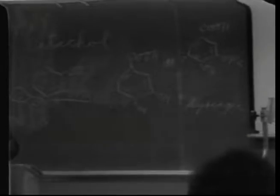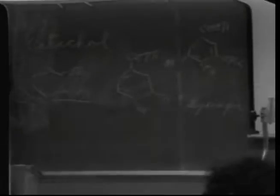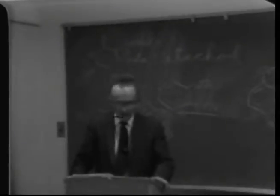Phloroglucinol is the trihydroxy analog of resorcinol, with the three OH groups meta to each other. To briefly review: if we have a group on a benzene ring, a group ortho is adjacent, para is across, and meta is in between. So the trihydroxybenzene with three OHs in the meta positions is phloroglucinol.